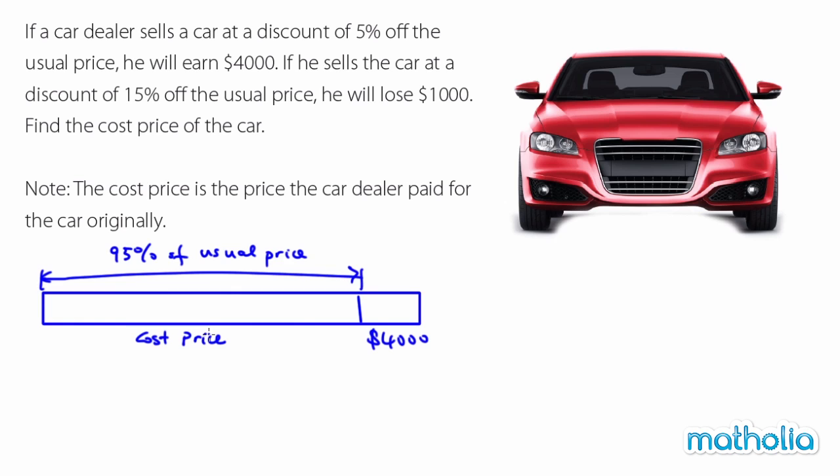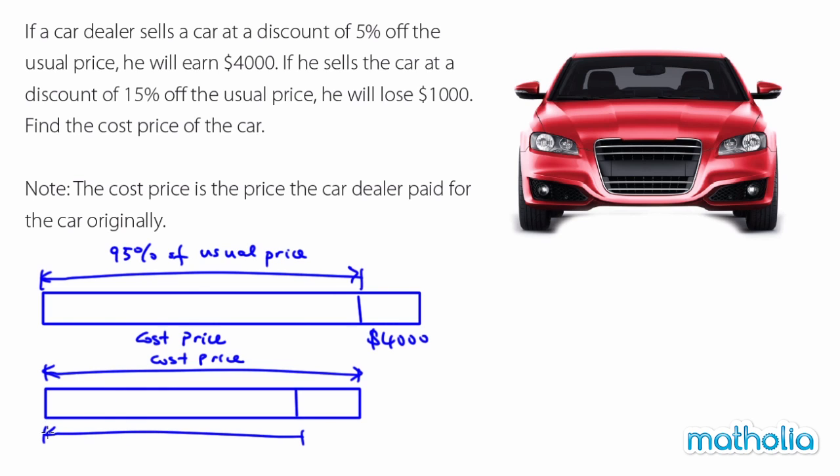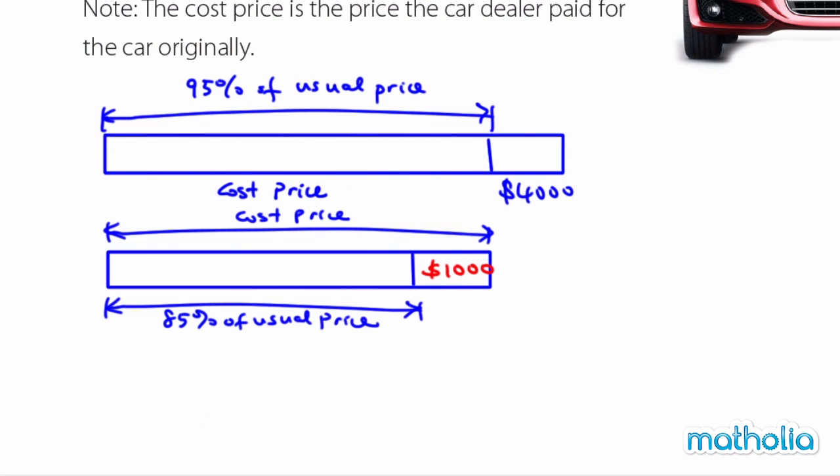Read the second line. If he sells the car at a discount of 15%, he will lose $1,000. So I'm going to draw another model. Now, this is my cost price. This is my cost price. The original price of the car, this is 85% usual price. He's going to lose $1,000. Maybe I'll use the red color to tell you that he's losing $1,000.